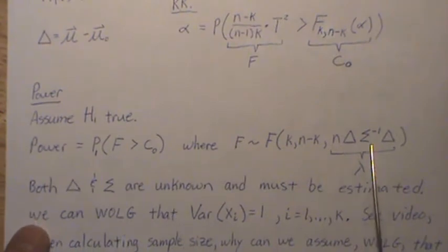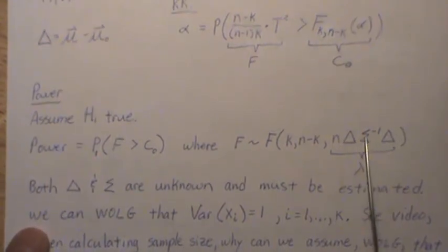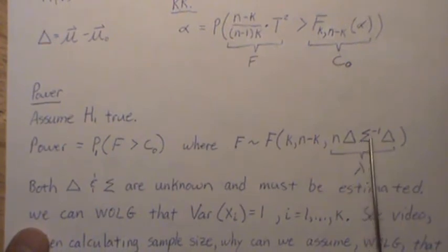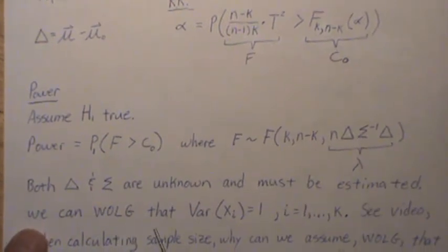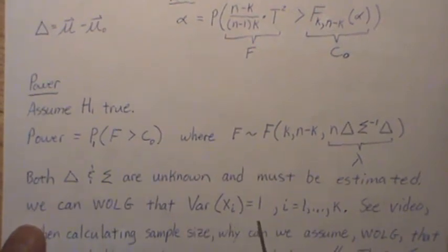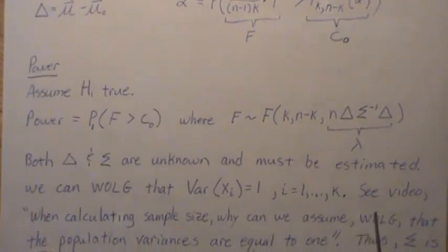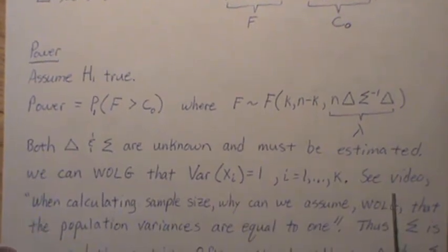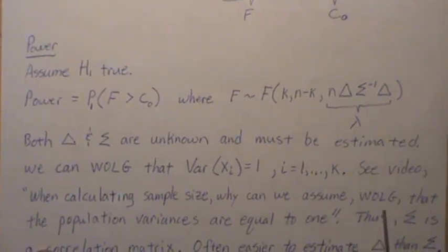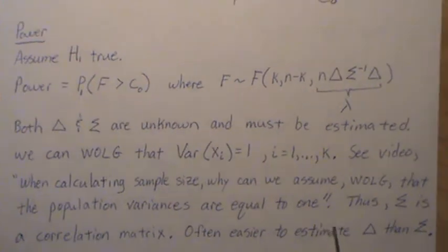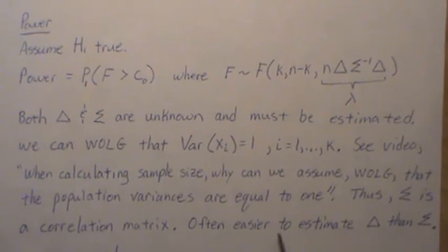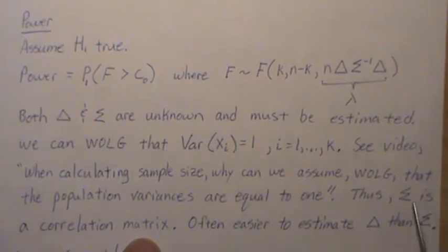Now, this is the covariance matrix. So down the diagonal are the variances and off diagonals are the covariances. But we can assume without loss of generality that each component has a variance of 1. And I have a video called 'When Calculating Sample Size, Why Can We Assume Without Loss of Generality that population variances are equal to 1?' So thus, sigma is a correlation matrix. If all the variances are 1 down the diagonal, that means the off diagonals are the correlations.